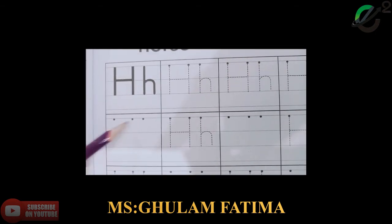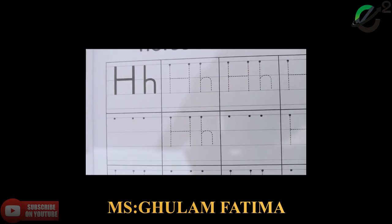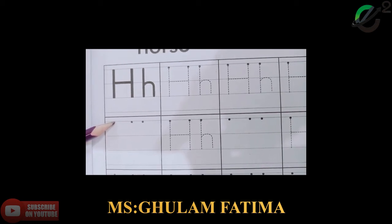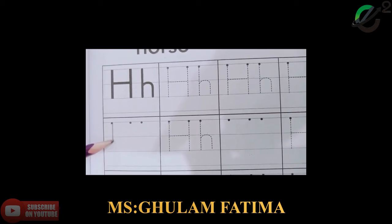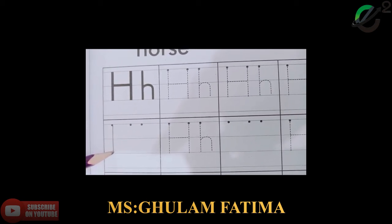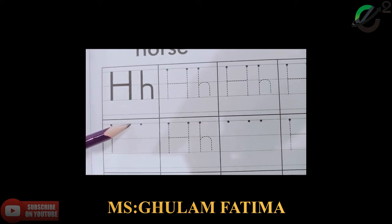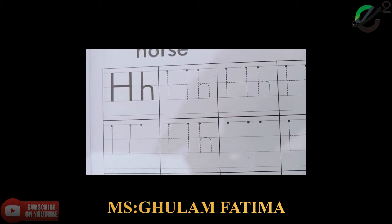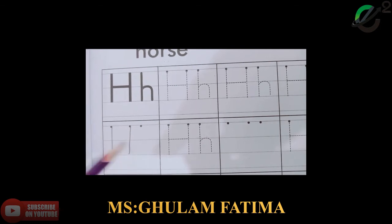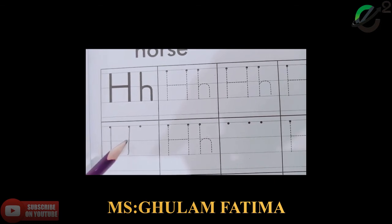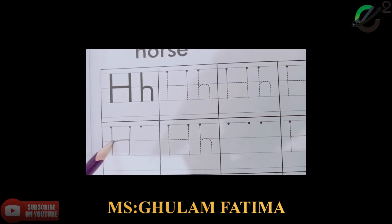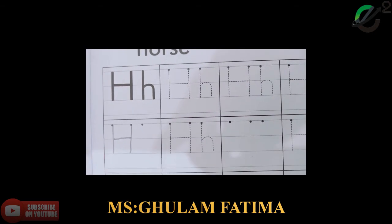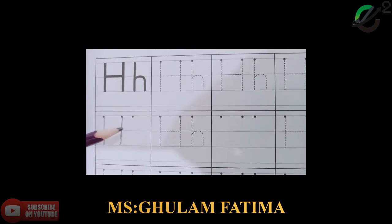You can see here two dots. We have to make a standing line starting from the top till the bottom — two standing lines side by side — and join these two lines with a sleeping line like this. This is capital H.